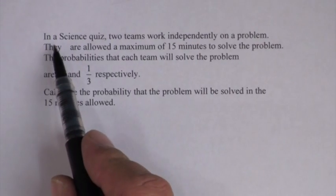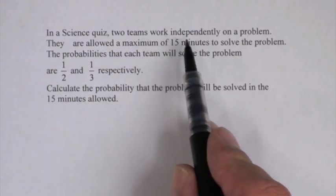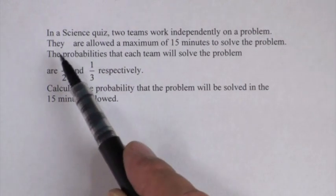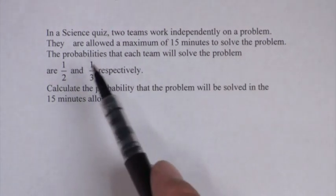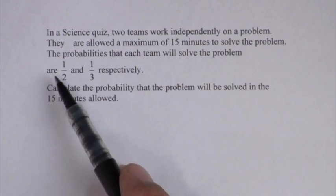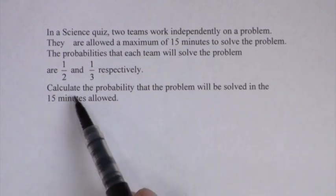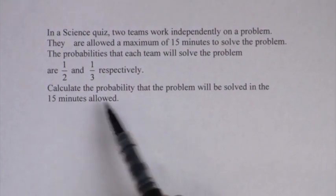The next problem we're going to discuss is one of those exciting real-life questions on probability. Let's read this question together. In a science quiz, two teams work independently on a problem. They are allowed a maximum of 15 minutes to solve the problem. The probabilities that each team will solve the problem are a half and a third respectively. Calculate the probability that the problem will be solved in the 15 minutes allowed.